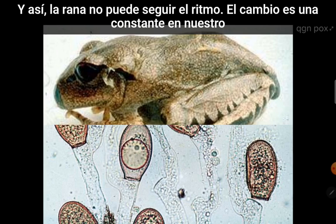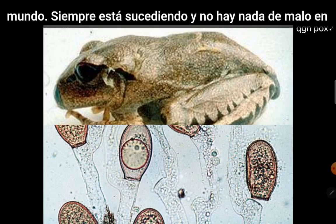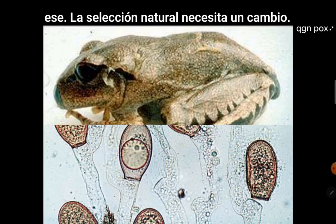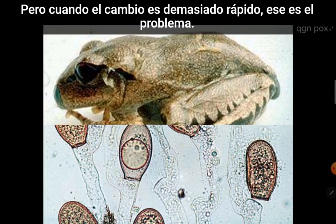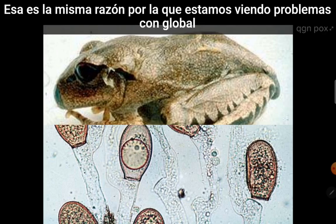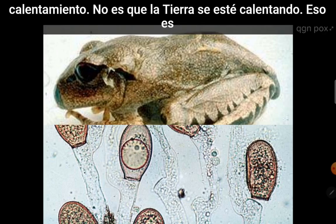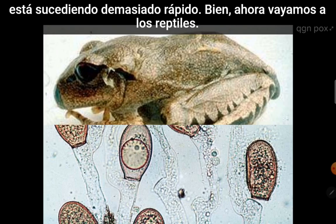Change is a constant in our world — natural selection needs change — but when the change is too fast, that is the issue. That's the same reason why we're seeing problems with global warming: it's not that the earth is getting warmer, it's that it's happening too quickly.